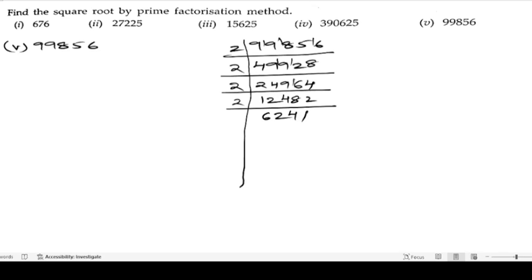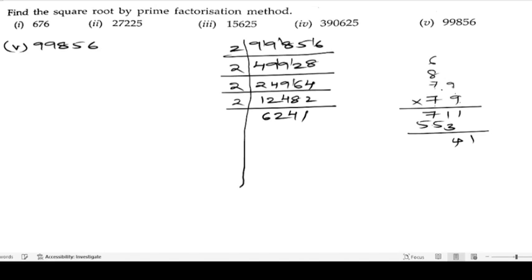We check further and find that 6241 factors as 79 into 79. Verifying: 79 into 79 — 9 nines are 81, carry 8; 9 sevens are 63 plus 8 is 71; 7 nines are 63; 7 sevens are 49 plus 6 is 55 — giving 6241. So 6241 equals 79 into 79.